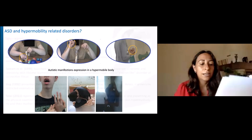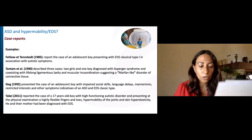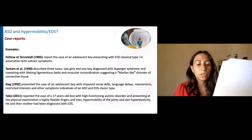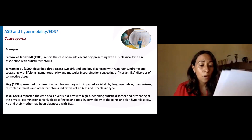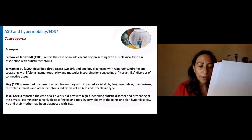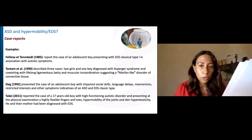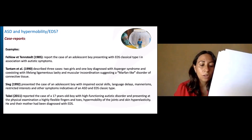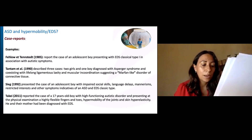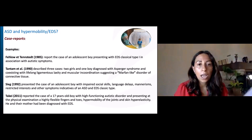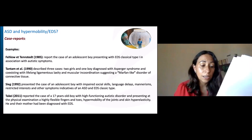Literature linking autism and hypermobility related disorders is very scarce. Some case reports have been published. Fellow and Tasted in the 80s were among the first to report a case of an adolescent boy presenting with EDS classical type in association with autistic symptoms. In the 90s, Tantan et al. published three cases — two girls and one boy — diagnosed with Asperger's syndrome coexisting with hypermobility and muscular incoordination, suggesting a disorder of connective tissue. Other cases in this line were published later.